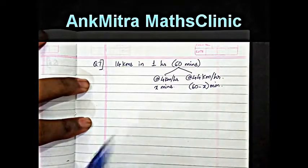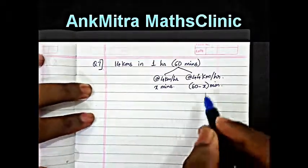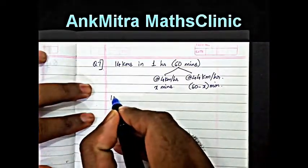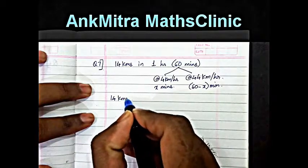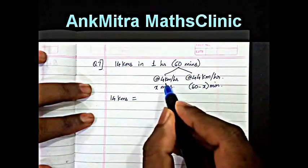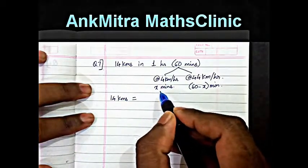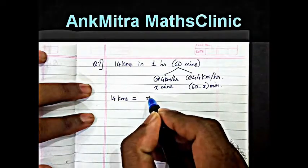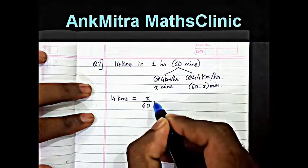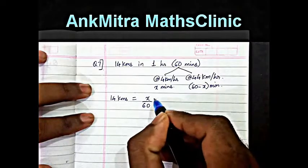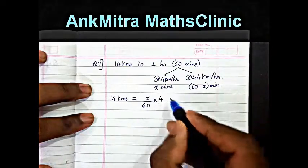What we have is total being 14 km journey. Part of it by foot is x minutes. So x minutes means it will be x upon 60 hours multiplied by speed of 4 km per hour.